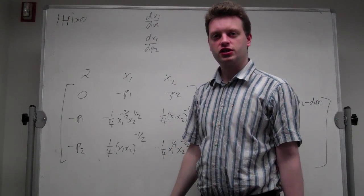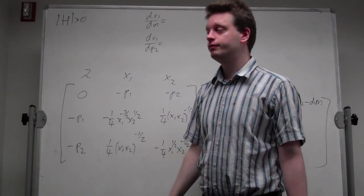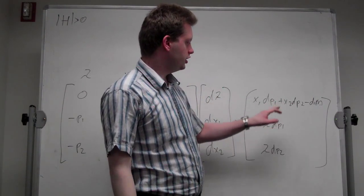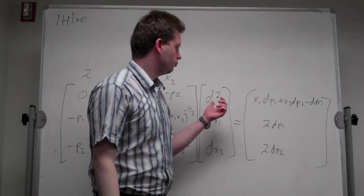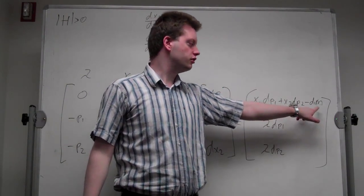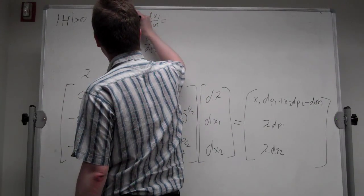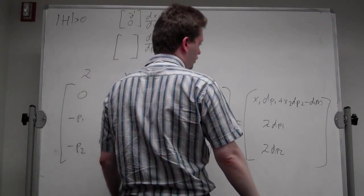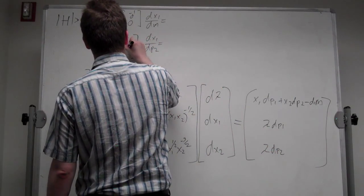Before we can calculate these comparative static results, we need to find which vector to replace in the matrix and with what. Since we want dm, we set dp1 and dp2 equal to zero, which yields the right-hand-side vector: minus dm, 0, 0. Dividing through by dm, we get the vector minus 1, 0, 0. For dp2, the vector is: x2, 0, and lambda.